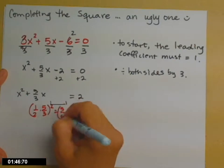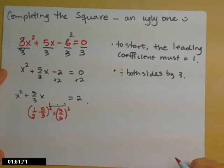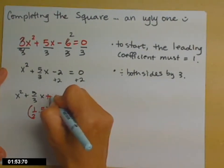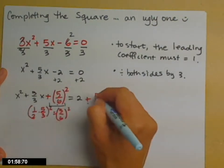So that's 5 sixths squared and that goes here and then I need to put it on both sides so that I balance and it gets added in. So plus 5 sixths squared on both sides.